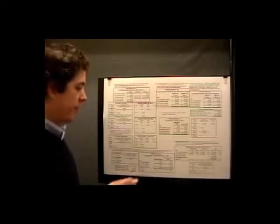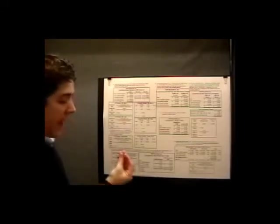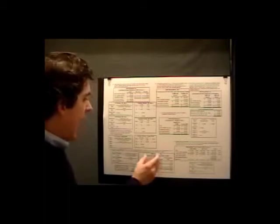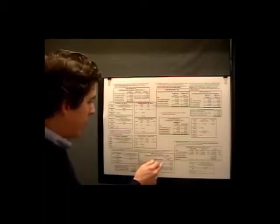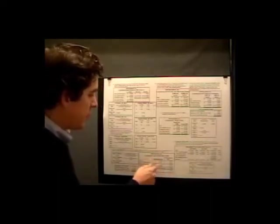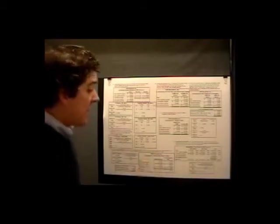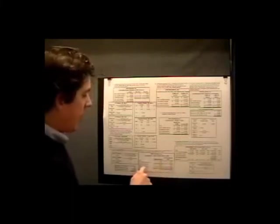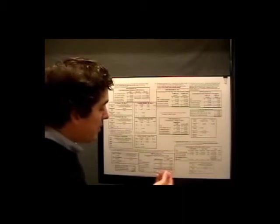What will a 15% increase in sales volume do to our profits? On a percentage basis, we take 15% times the degree of operating leverage of 4.33, giving a 65% increase in profits. Looking at the income statement, sales at 6,500 units is $65,000, variable costs are $39,000. Net operating income is $6,000. Increasing sales by 15% increases sales to $74,750 and variable expenses proportionally, while fixed expenses stay flat. That increases profit from $6,000 to $9,900 — an increase of $3,900, which is 65%.